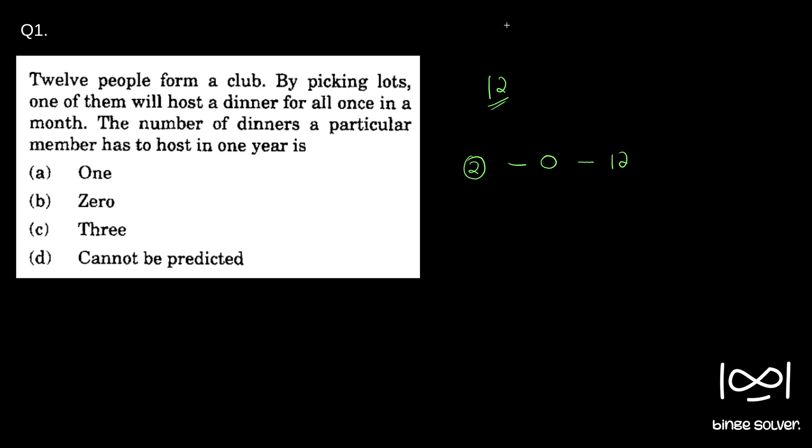So every 12 times he is chosen, he has to host the dinner for all. So any number from 0 to 12 can be the answer. Clearly, the solution is d: cannot be determined.